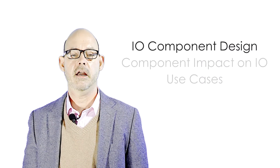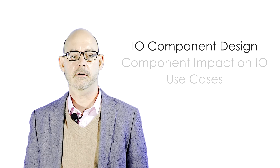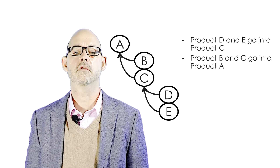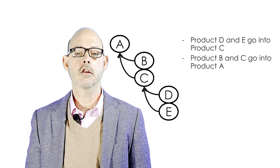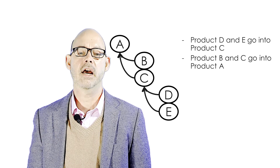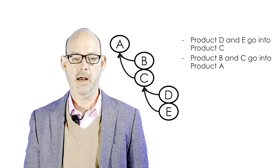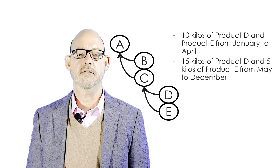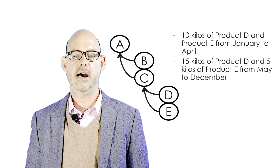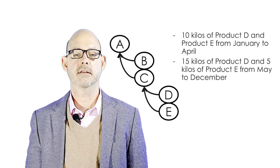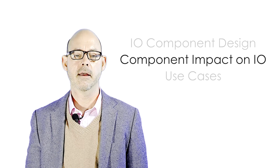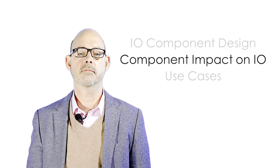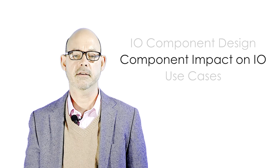Essentially, IBP I.O. allows for a bill of materials so that one or more components can be used to make a finished product. You can also go down multiple levels in the BOM. You can make the quantity needed for each component change over time if your business process requires that. Finally, the I.O. algorithm will risk pool with components wherever possible.